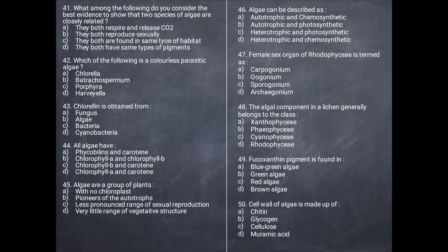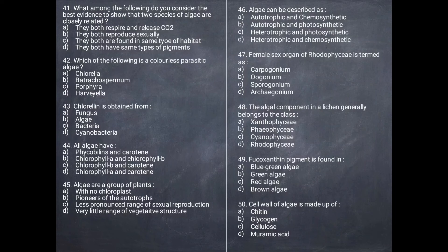Next question: What is the best evidence to show that two species of algae are closely related? We consider what pigments are present — so the correct answer is they both have the same type of pigments.